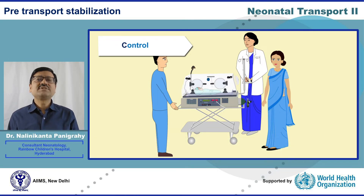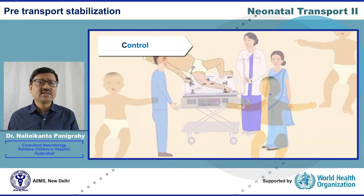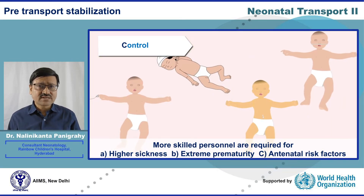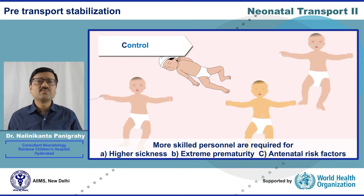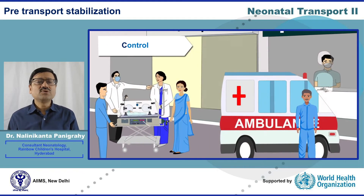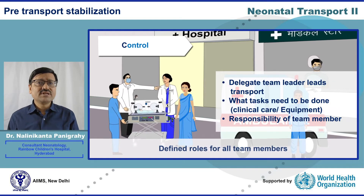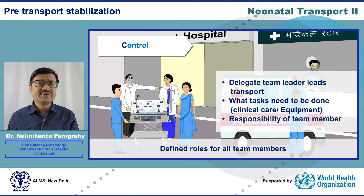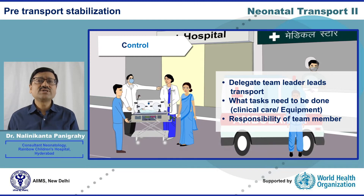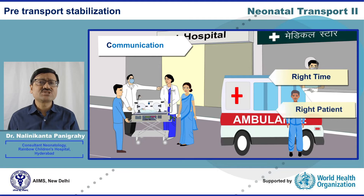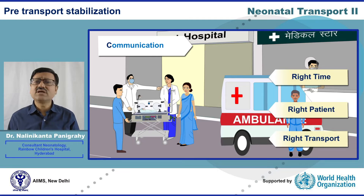For Control — as per NRP guidelines, for extreme preterm babies and those with antenatal risk factors, a more skilled person should be assigned for transport. The team leader role should be delegated, and other members' roles assigned before transport to take complete control of the situation. Next, Communication is key to achieving everything right — the right patient, right transport, at the right time.